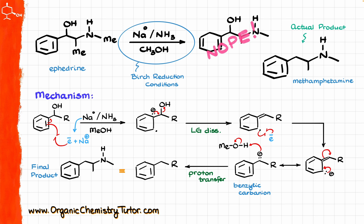And if I now redraw my molecule without the R, we have the final product looking like this. So instead of doing the reduction of the aromatic ring and destroying the aromaticity, in this case we actually ended up just kicking the OH out and get the final product — which is still aromatic but without the OH group in the benzylic position.